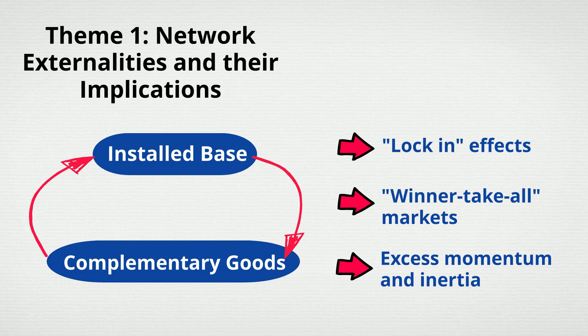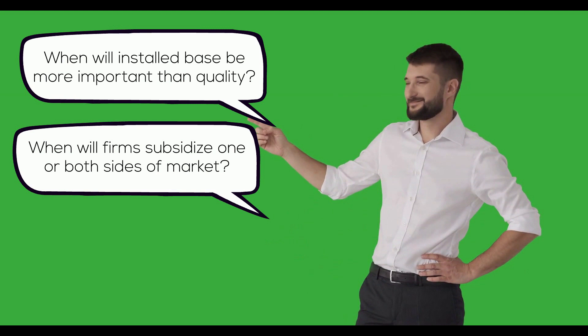These were all situations that created either confusion or concern among economists. Research in this area thus asked questions like when will installed base be more important than quality, when will firms subsidize one or both sides of the market, and do natural monopolies harm consumers?